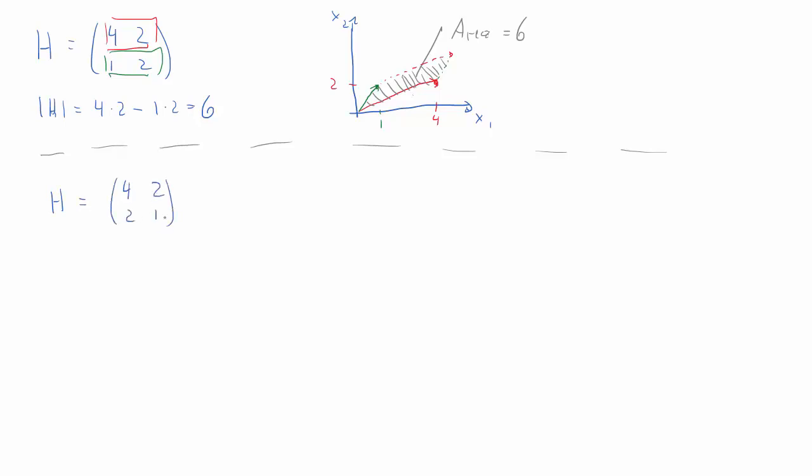Here is our next example. H has this value. And we calculate the determinant. Product of diagonal minus product of off diagonal is 0. So what area has the size of 0? Let's represent our two vectors again. The vector 4, 2. That is the same vector as before. 4 on the x1, 2 on the x2 axis. Here's the point. And here's our vector.